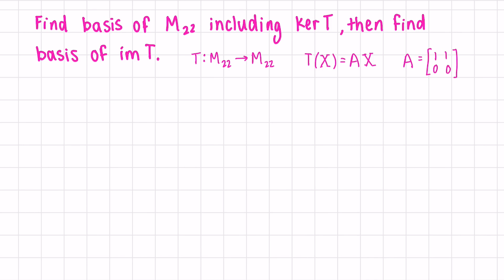Let's try an example: find a basis of M22, all 2x2 matrices, that includes the kernel of the transformation, and then find a basis for the image of the transformation. When it's transformed, we have to multiply on the left by our matrix A. Let's do this multiplication. Let x equal the matrix A, B, C, D. We get A plus C, B plus D, 0, 0.